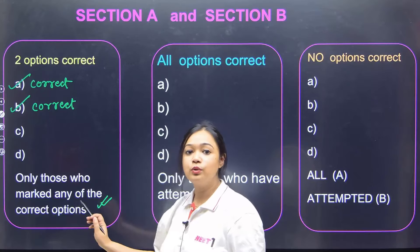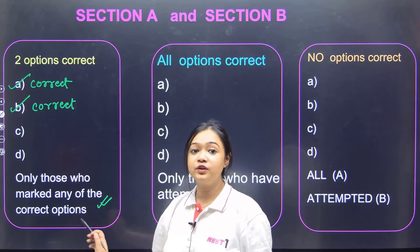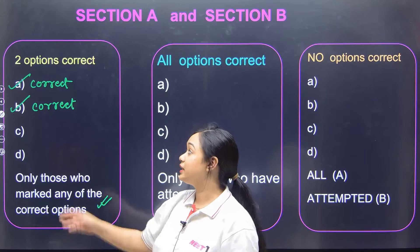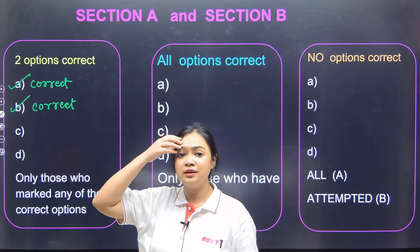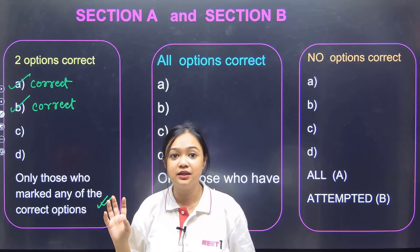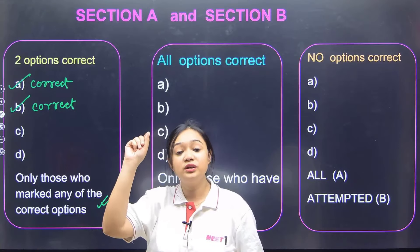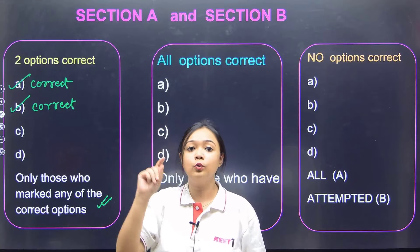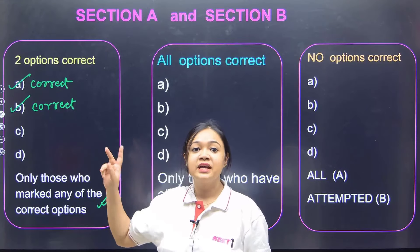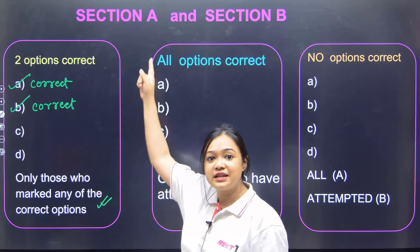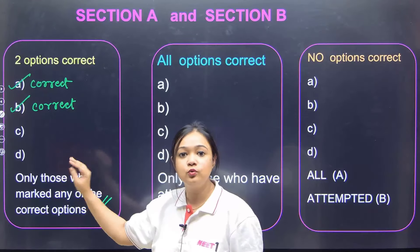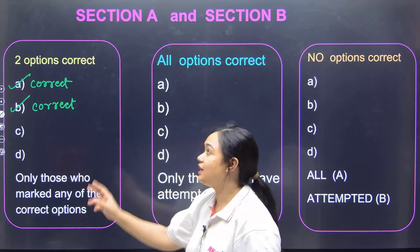Only those who have marked any of the correct option will get marks. Aapko lage ga, 'Aree, doh correct hai, yeh main attempt karta hi nahin hoon' — nain! Aap in mein se koi aik bhi gola zarur bhar ye. And this is true for Section A mein bhi, Section B mein bhi — yeh rule same hai.